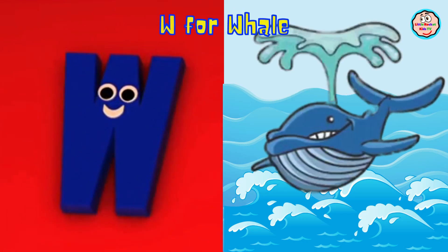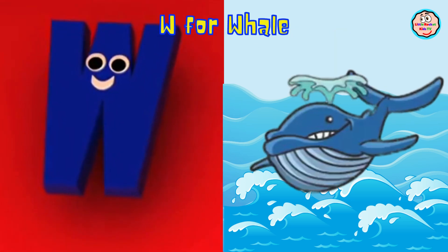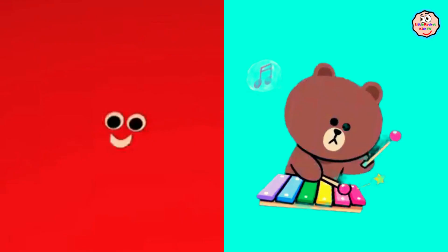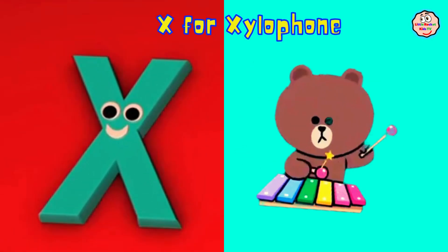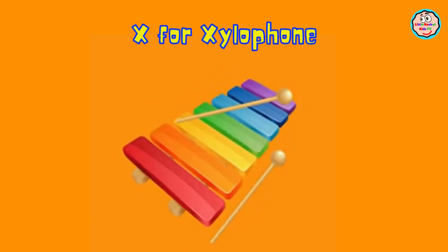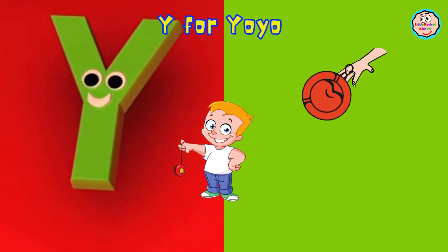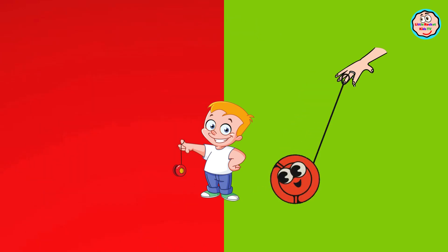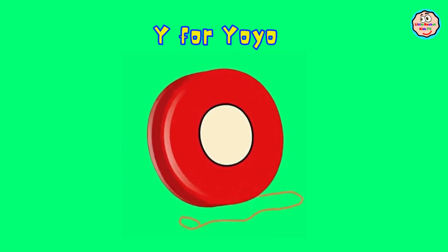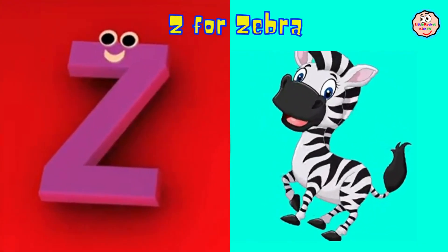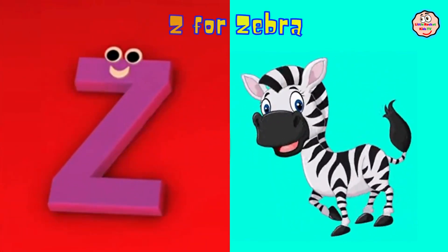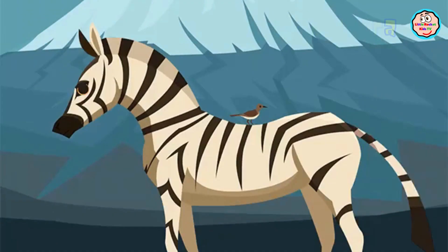W is for Whale, W-W-Whale, W-Whale. X is for Xylophone, X-Xylophone. Y is for Yo-Yo, Y-Y-Yo-Yo, Y-Yo-Yo. Z is for Zebra, Z-Z-Zebra, Z-Z-Zebra.